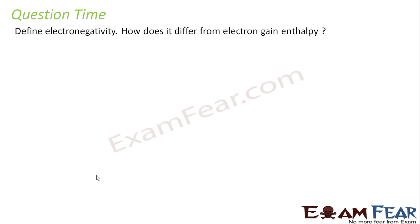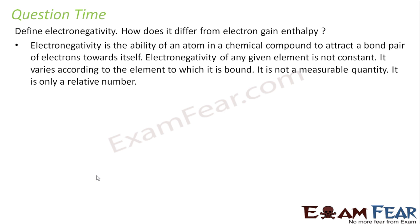What is electronegativity and how it is different from electron gain enthalpy? So as you have seen electronegativity is nothing but ability of atom in a chemical compound to attract pair of electrons. So please note this has to be in a chemical compound and it is not constant. I cannot say that electronegativity of fluorine is X. I cannot say it because it varies from compound to compound. It varies with which what is the other atom with which this molecule is paired. It varies. It is not a measurable quantity. It is only a relative number.